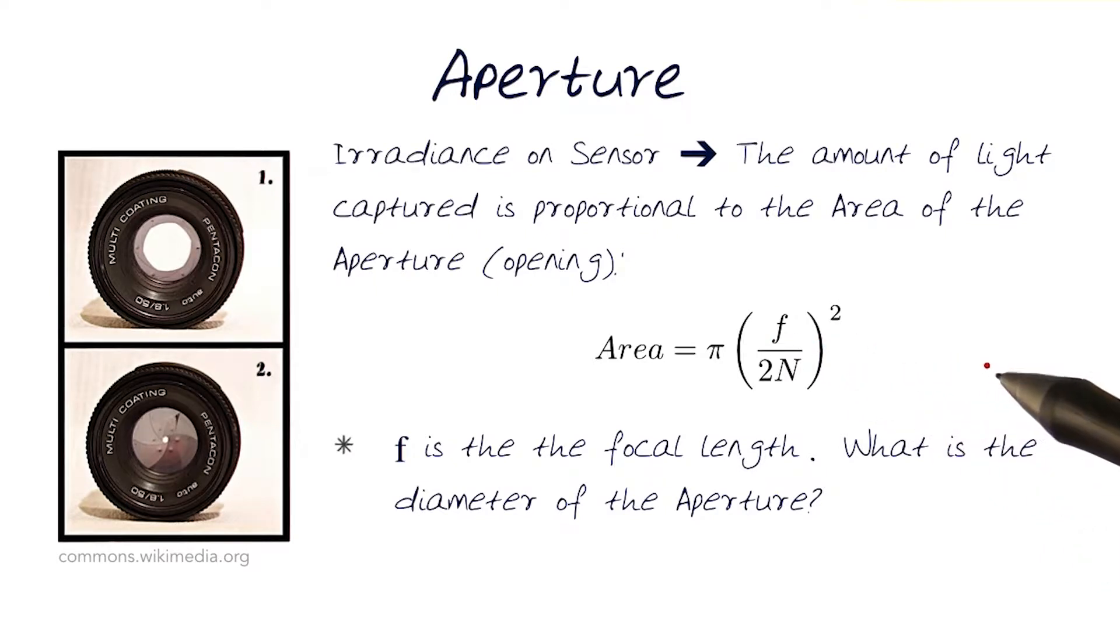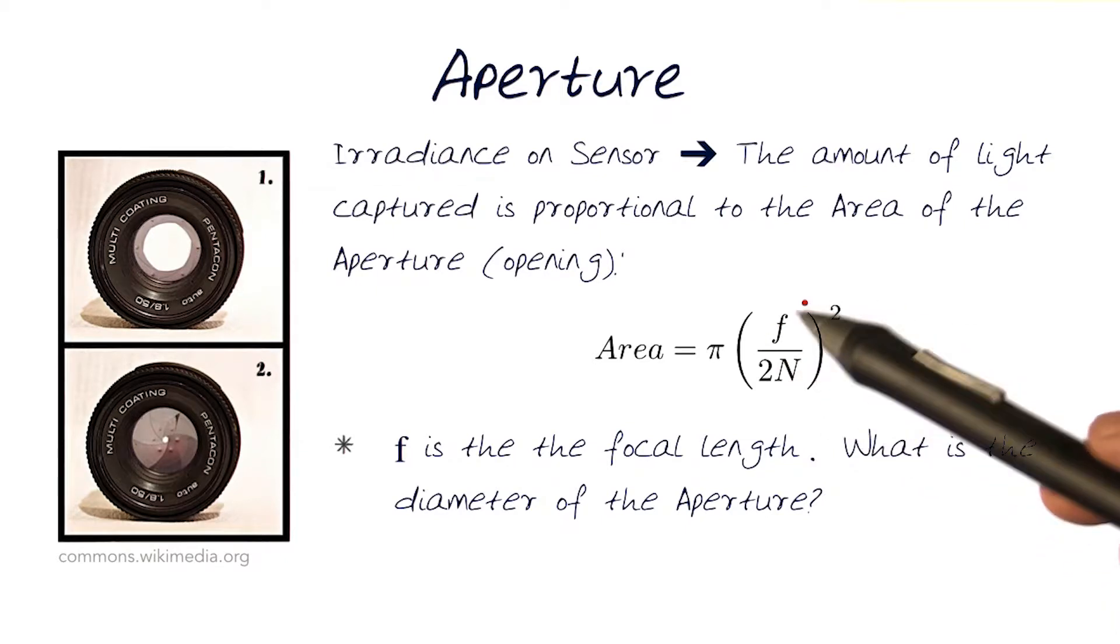The area of a circle is πr², where r would be the radius. This is replacing the radius by this term here.